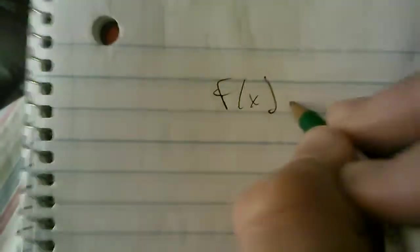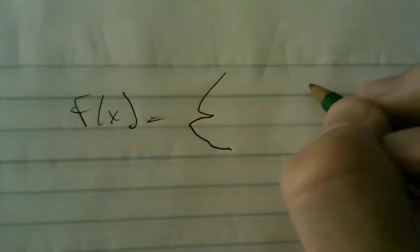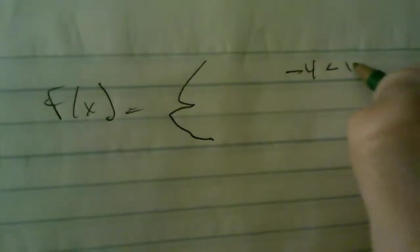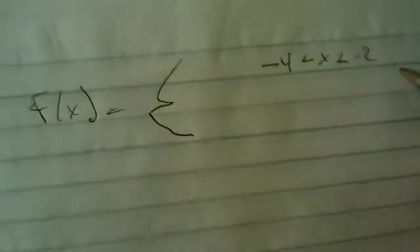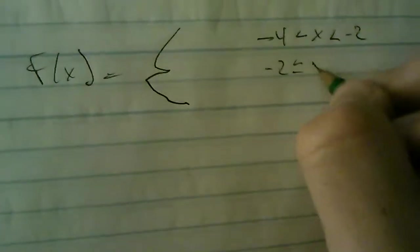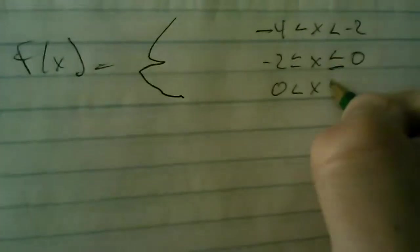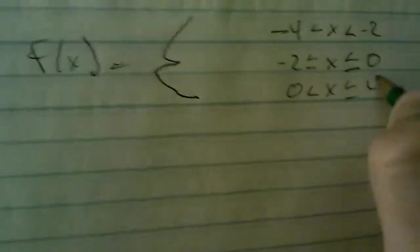So I'm going to give you an example. Let's say we had a piecewise function, f of x, equals. So let's say this is negative four less than x is less than negative two. This is negative two less than or equal to x is less than or equal to zero. And zero is less than x is less than or equal to four.